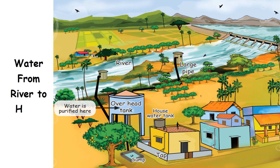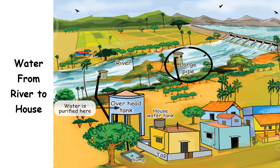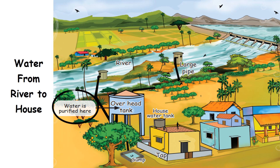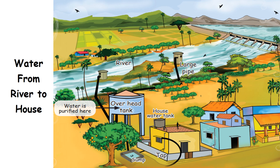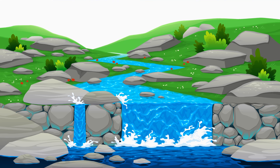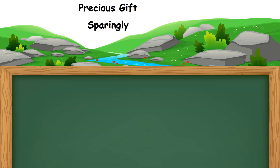Water from River to House. From the river, through large pipes, water reaches the overhead tank where it gets purified. From the overhead tank, it comes to the house water tank and finally to taps. Water is a precious gift. Use it sparingly.